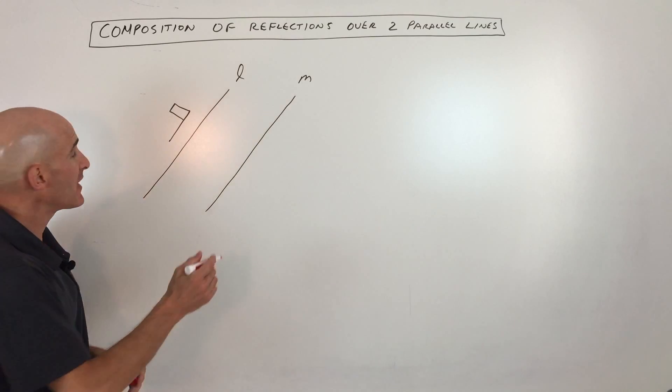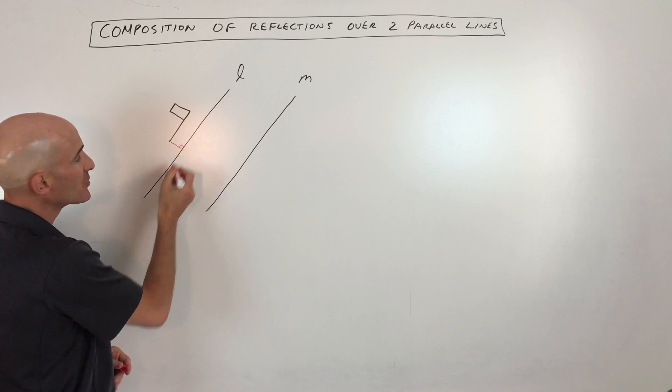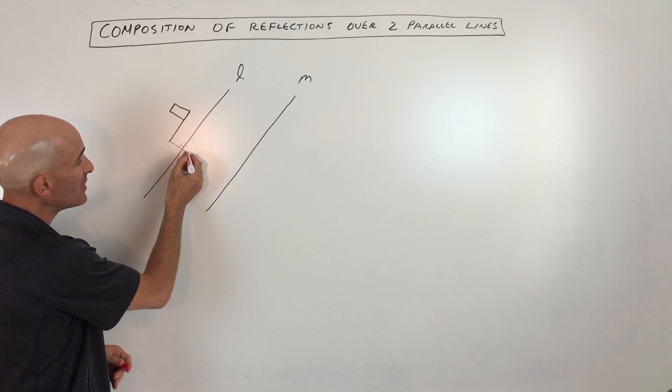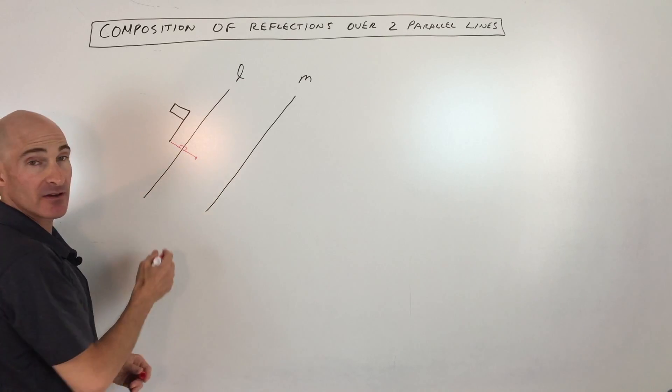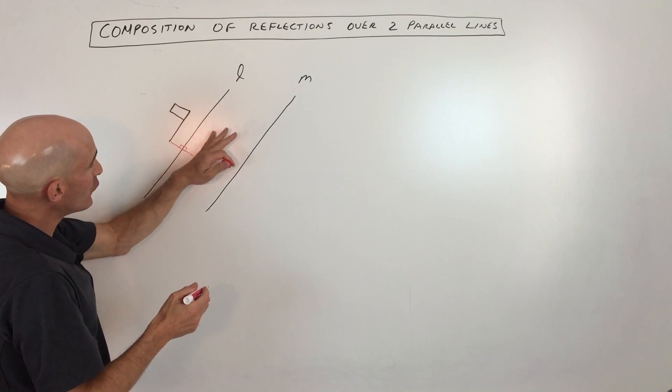Okay, so when you do a reflection, what you want to do is measure the perpendicular distance to that line of reflection, and you want to go the same distance on the other side of that line. So you're folding it over the line.